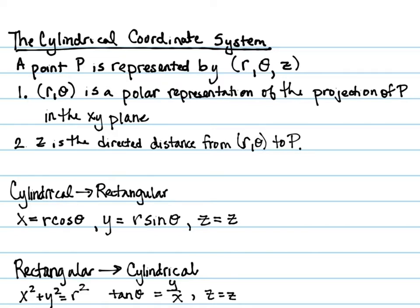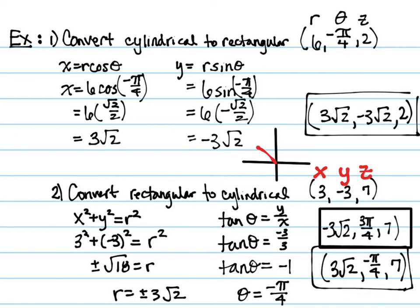So we're going to do a few examples of conversions now with these coordinate conversions. First we're going to convert from cylindrical to rectangular. The ordered triple that we're given is (6, -π/4, 2). You'll notice that I wrote r, θ, z above them. You don't have to do that, but it helps to keep it straight since we keep moving between systems here. So we're going to need to find x, y, and z. We already know z, it's given, it's 2.